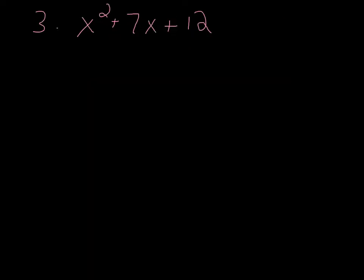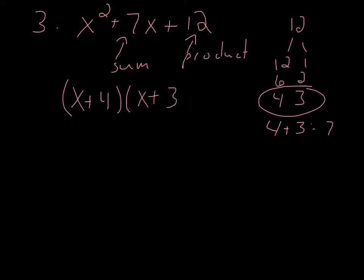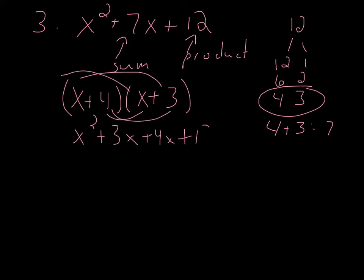Factoring the next one — again, we want the sum for the middle term and the product for the last. Let's look at all the factors of positive 12. We've got 12 and 1, 6 and 2, 4 and 3. And there we go — 4 plus 3 gives 7. So we've got (x + 4)(x + 3). Multiplying back: x² + 3x + 4x + 12 — combining like terms, we're good to go.